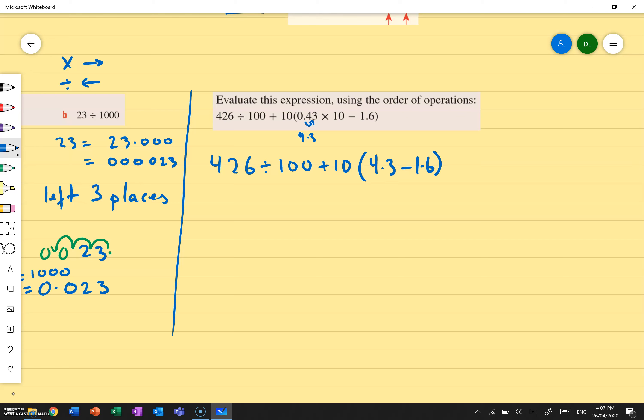Now I can say, well, I need to do the brackets. So 426 divided by 100 plus 10. And in the brackets, what's 4.3 minus 1.6? Remember, make sure your decimals are aligned. So 3 minus 6, can't do that. Bring the 1 over. So it's 13 minus 6, which gives me 7. Bring the decimal point. That's now at 3. 3 minus 1 gives me 2. So it's 2.7 here.